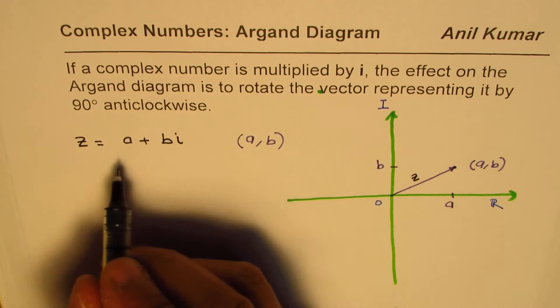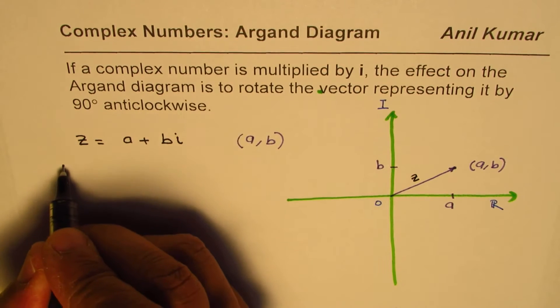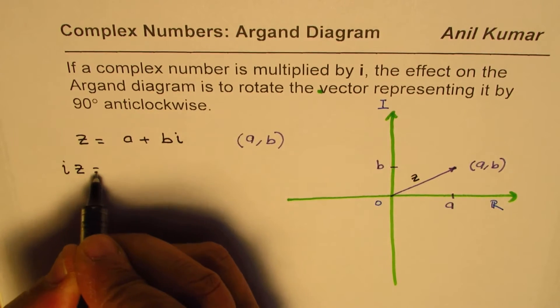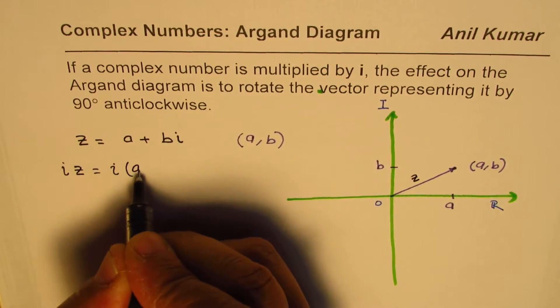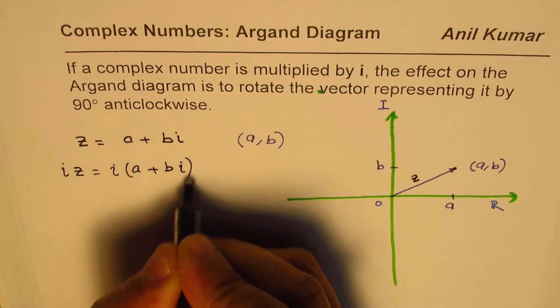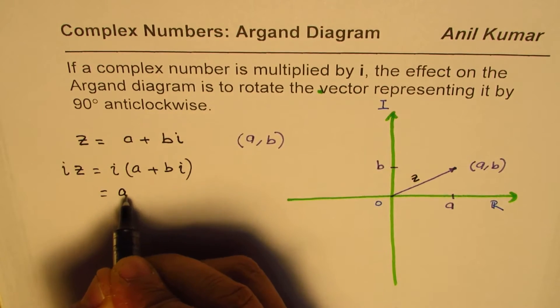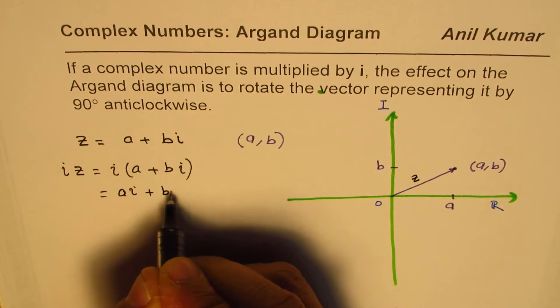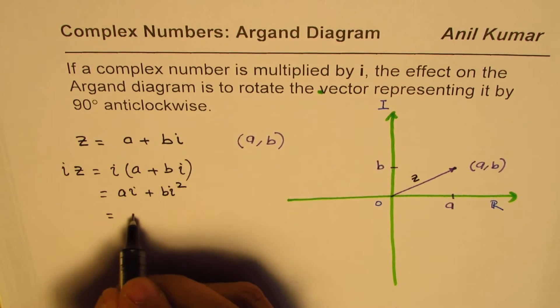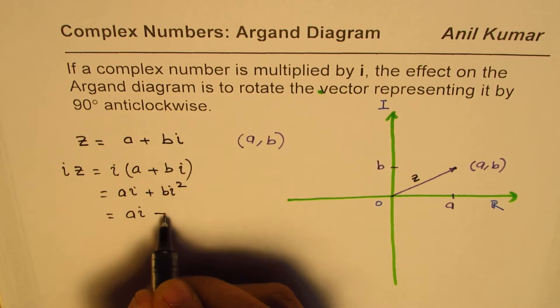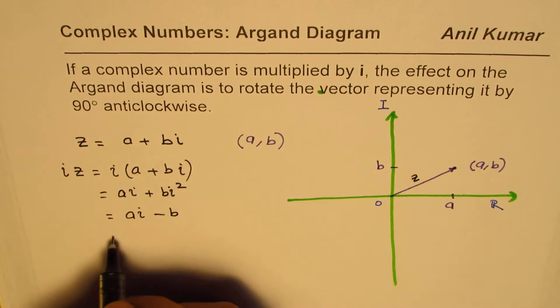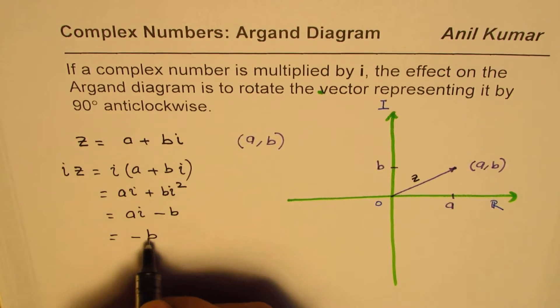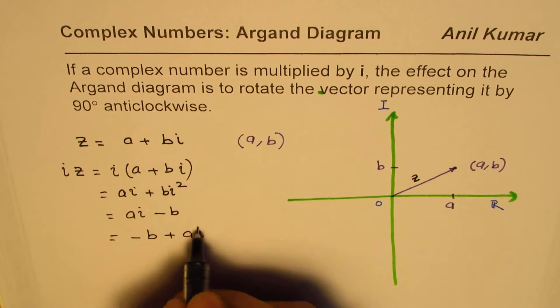Now, if I multiply this by i, what happens? Let's have a look. So, iz is i times (a plus bi). Expanding, we get ai plus bi squared. i squared is negative one. So, I could write this as ai minus b. And rearranging, I write minus b plus ai, right?